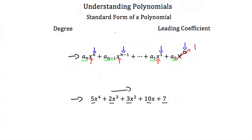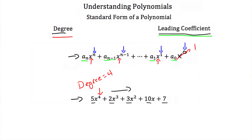Now that we know how to write a polynomial in standard form — which is just decreasing exponents as we go to the right — let's talk about what a degree and a leading coefficient is. The degree of a polynomial is just the highest exponent in that polynomial. So the degree of this example polynomial would be 4. The leading coefficient is just the coefficient — the number that the highest degree term has multiplied by it. You go find the term with the highest degree, which is this first one right here, and the number multiplied by that variable — in this case, it's 5. So our leading coefficient would be equal to 5.